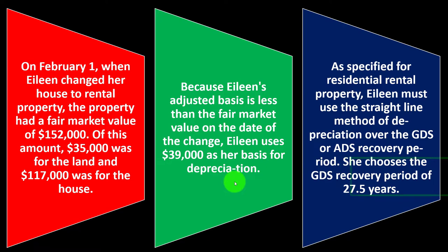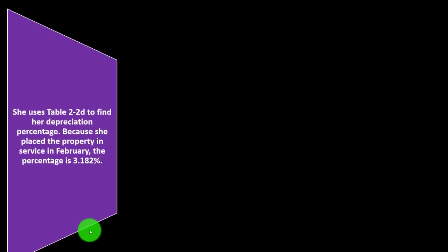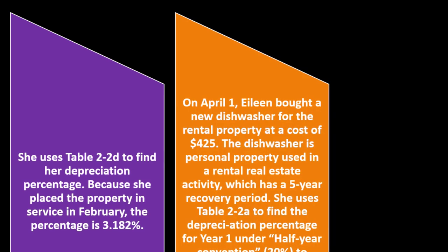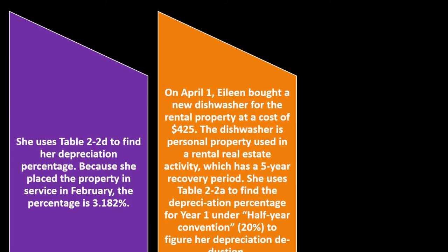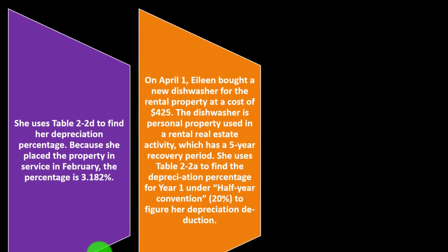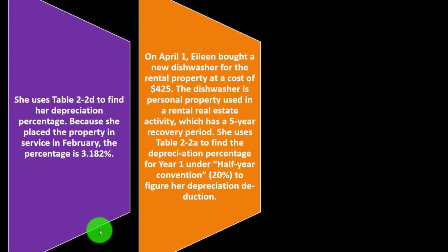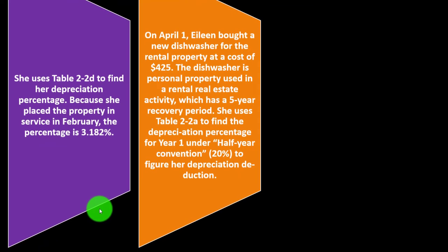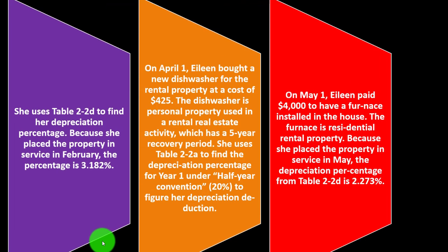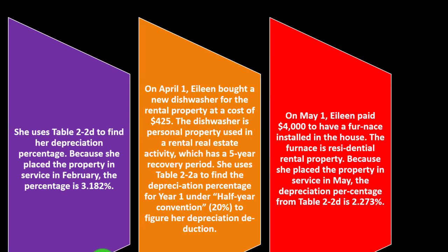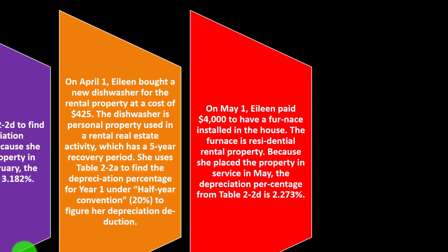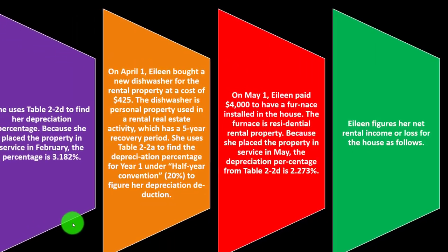She chooses the GDS recovery period of 27.5 years. She uses Table 2-D to find her depreciation percentage — because she placed the property in service in February, the percent is 3.182%. On April 1st, she bought a new dishwasher for the rental property at a cost of $425. The dishwasher is personal property used in the rental real estate activity with a five-year recovery period. She uses Table 2-A to find the depreciation percentage for year one under the half-year convention: 20%. On May 1st, she paid $4,000 to have a furnace installed in the house.